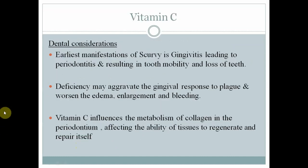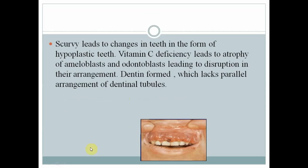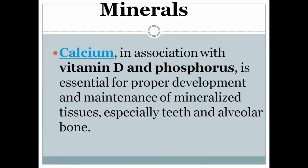Vitamin C has a crucial role in maintaining proper periodontal health. The earliest manifestation of scurvy in the mouth is gingivitis, which progresses to periodontitis and tooth mobility and loss. Deficiency aggravates gingival response causing bleeding, edema, enlargement and worsened periodontal condition. Scurvy severely affects gums and causes enamel hypoplasia with atrophy of ameloblasts and odontoblasts. The dentine formed lacks the parallel arrangement of dentine tubules, affecting both soft and hard tissues.